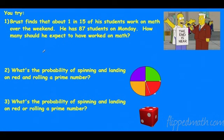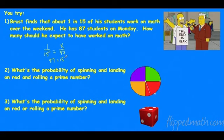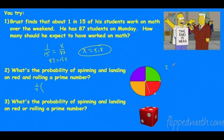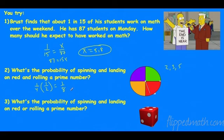Practice problem: Brus finds about one in 15 of his students work on math over the weekend. He has 87 students on Monday — how many does he expect to have work done? Set up the proportion: 87 equals 15x, divide by 15, and he's looking at about 5.8 students who did work over the weekend. What's the probability of spinning and landing on red and rolling a prime number? One in four times one half equals one in eight chance.